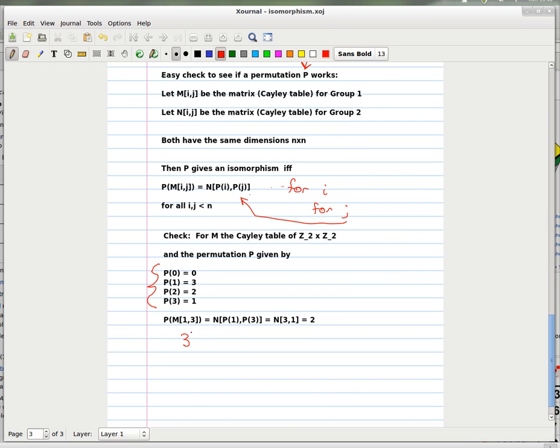Now apply P to 1 and that gives you 3, because that's just the definition of P here. Apply P to 3, and that gives you 1, because what P basically does is swap 1 and 3. So what we have here is 2.